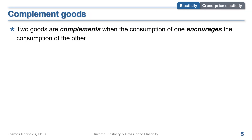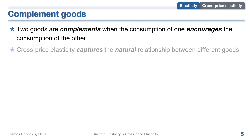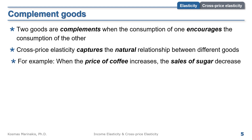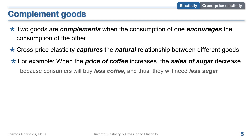Two goods are complements when the consumption of one encourages the consumption of the other. Cross-price elasticity just captures the natural relationship between different goods — the goods are complements not because of the elasticity, but because we generally like to consume them together. For example, when the price of coffee increases, the sales of sugar decrease, because coffee is more expensive and consumers buy less, so they also need less sugar.